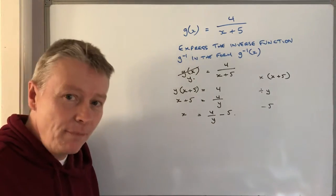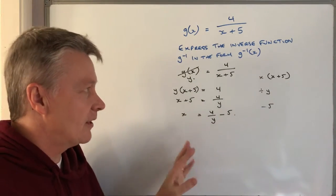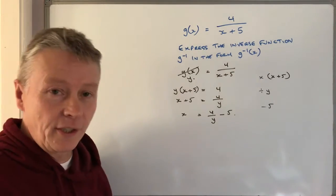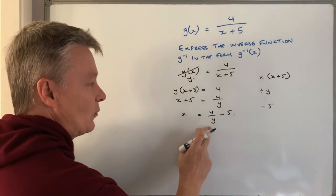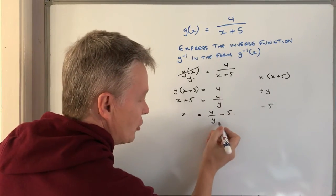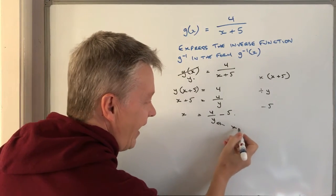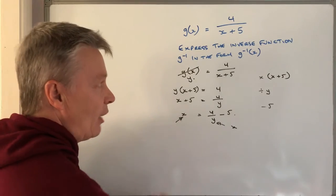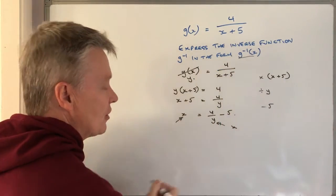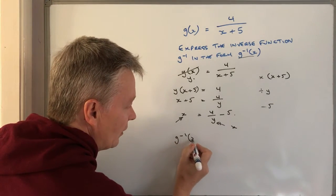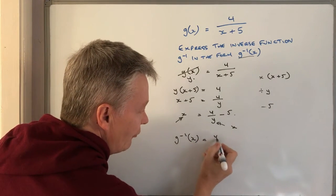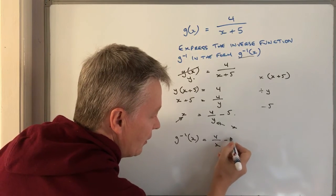That's pretty much it. It's now just a case of tidying this up and putting it in the correct form. The way we do that is we change the y to x, and change this back to the original requirement for the subject of the formula. So that becomes g^(-1)(x) = 4/x - 5.